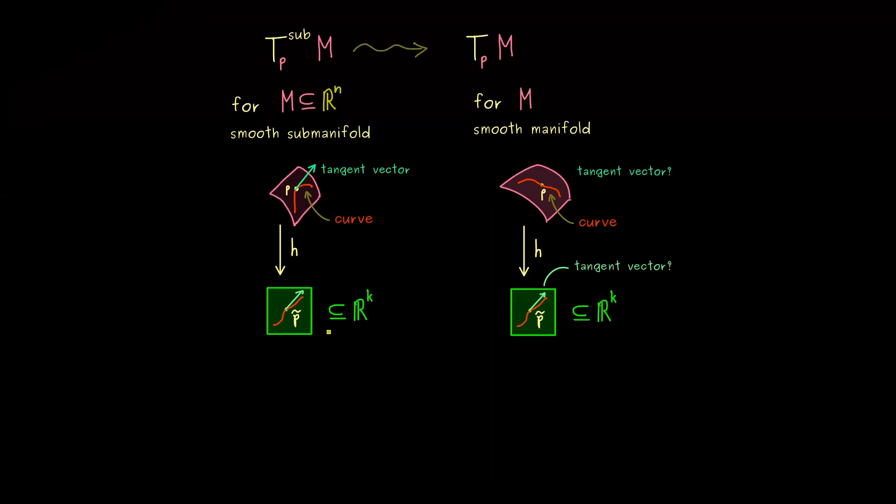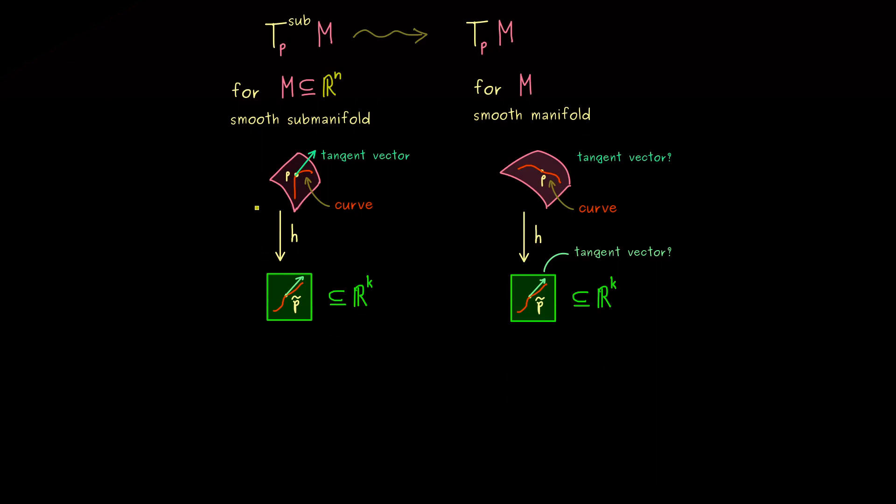And obviously, we could do that if we knew what the map h does to the tangent vector. Because then, we could simply go backwards to define the actual tangent vector. Now, this is exactly the idea you should have in mind for the following definition.